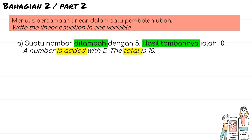For the first example: a number is added with 5, and the total is 10. We name the unknown number as x. A number added with 5 means x plus 5, and the total is 10. So the linear equation is x + 5 = 10.